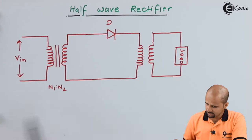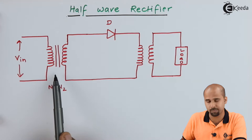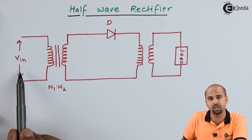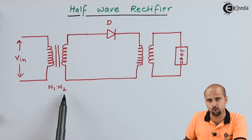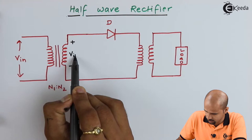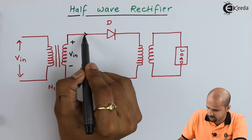This is the circuit which consists of a primary transformer. This is the output transformer and this is the diode. Input is given to the primary of the input transformer, and it is linked with the secondary. Depending on the turns ratio, we will be getting the output at the secondary of the input transformer, equal to Vin. Current will flow through this diode depending on the potential difference across the anode and cathode of the diode.